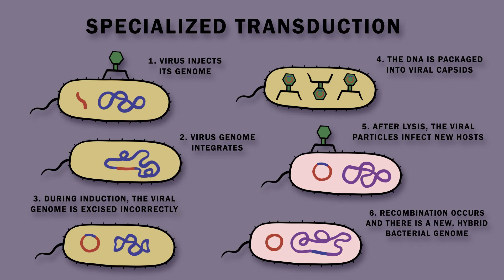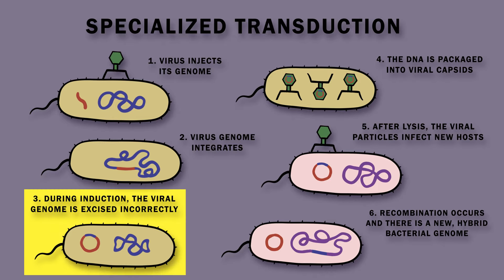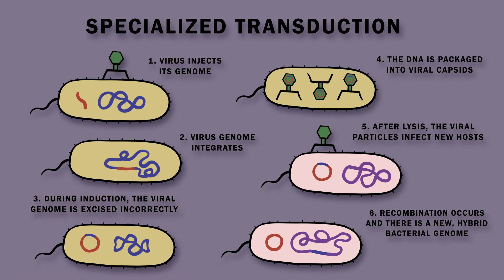Specialized transduction occurs during the lysogenic life cycle of the virus. Incorrect excision of DNA during induction results in a fragment of bacterial DNA being picked up instead of part of the viral genome, which then stays in the bacterial nucleoid. The bacterial DNA replicates as part of the bacteriophage genome, is packaged into phage capsids, and is injected into new bacteria.